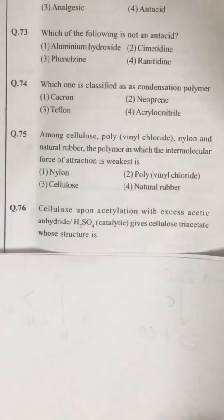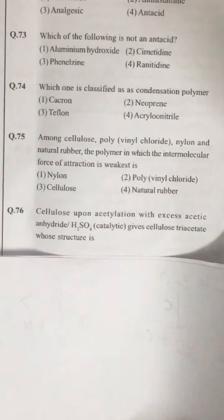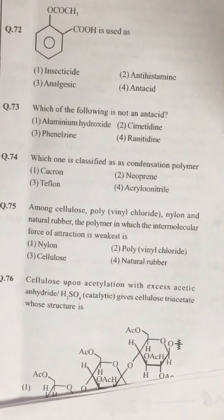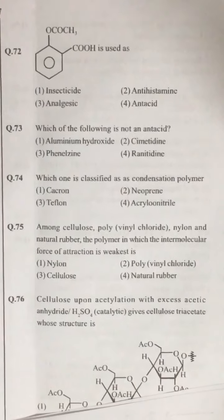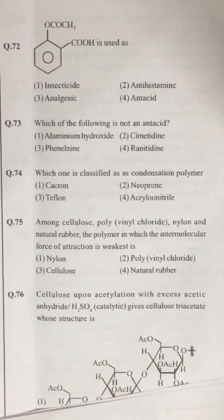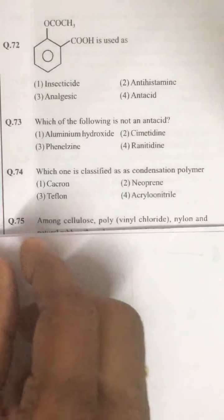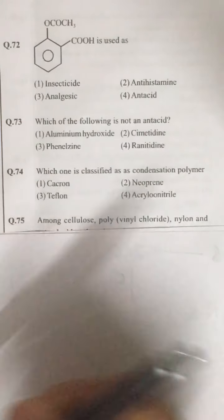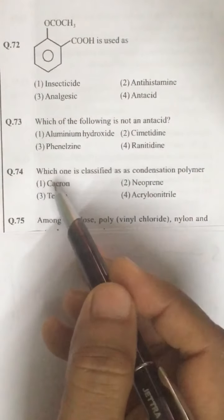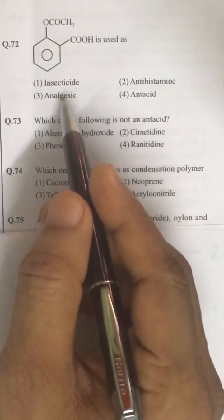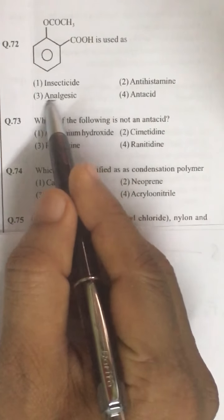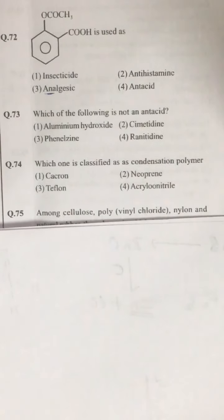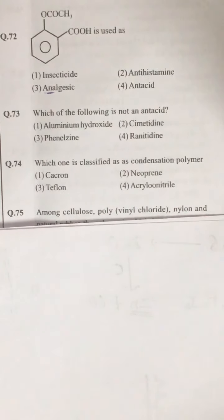Hello friends, we are continuing a discussion of Part 6, 12th part. Look at question number 72. This compound is acetyl salicylic acid, or aspirin. This is used as an antipyretic and analgesic. The correct answer to question number 72 is the third option.